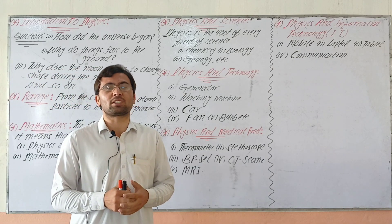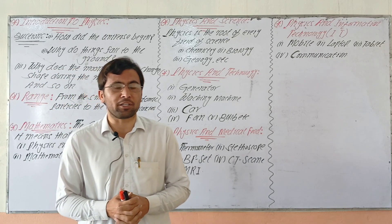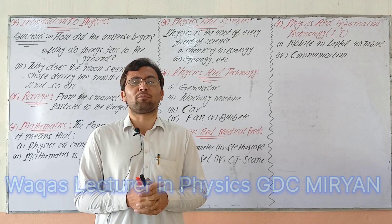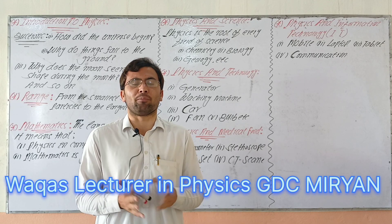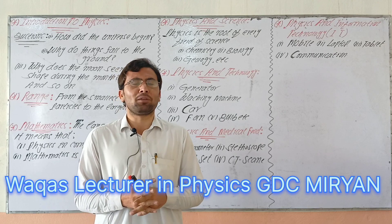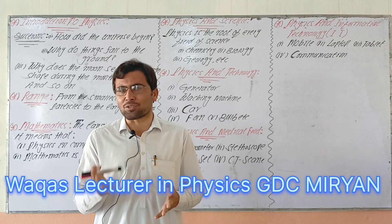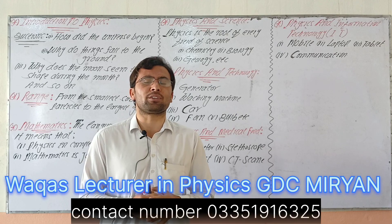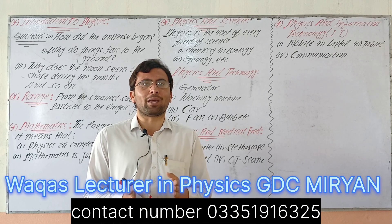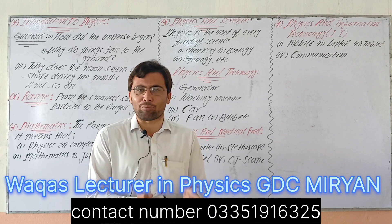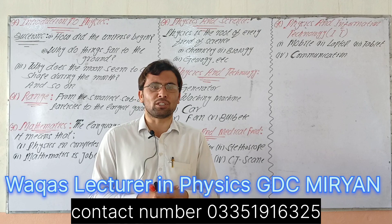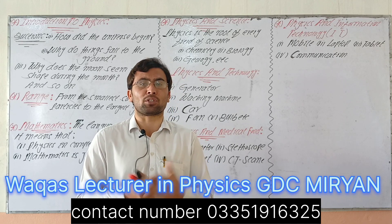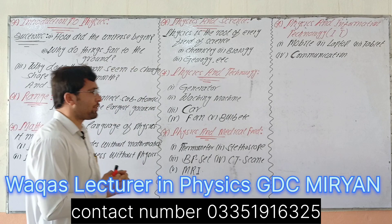In the previous lecture, we talked about the physics, matter, and energy. Matter is defined and energy is defined — it is called the physics definition. We have one level of physics definition.